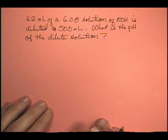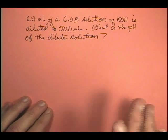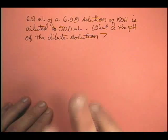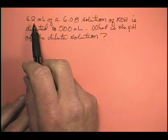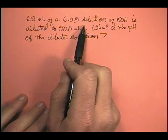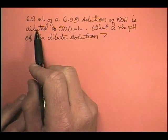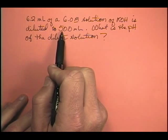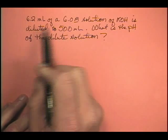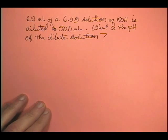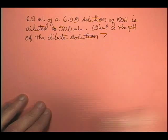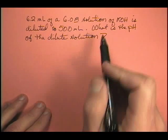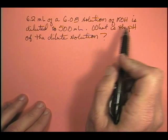Let's combine two concepts in one problem. This says 6.2 milliliters of a 6 molar solution of potassium hydroxide is diluted to 50 milliliters. So we're going to dilute this solution and then figure out the pH of the dilute solution. This is going to be a little bit more involved — we're diluting it and then measuring the pH, but it's tricky because this is a base.